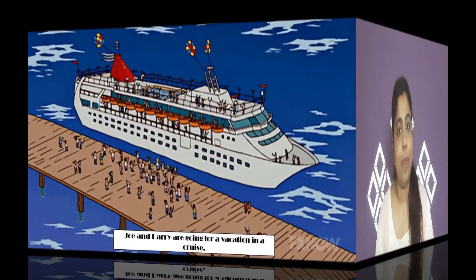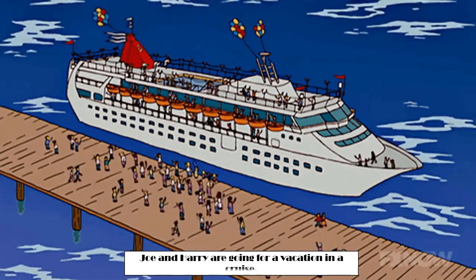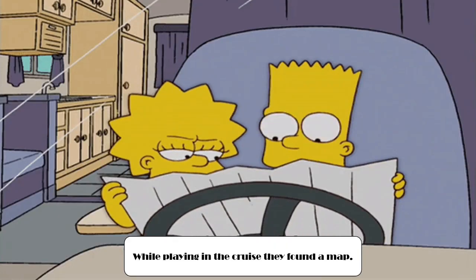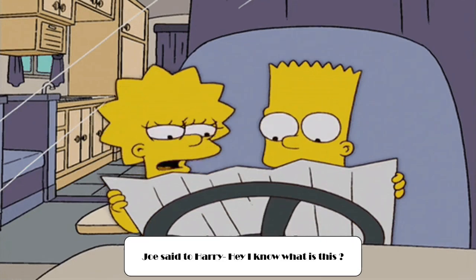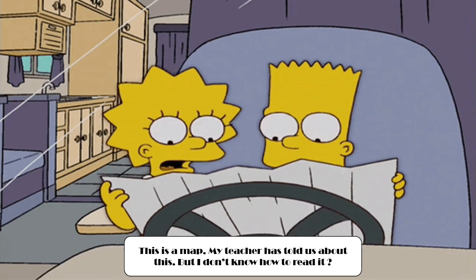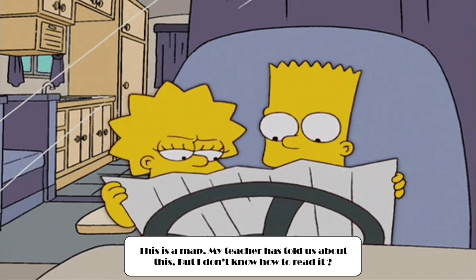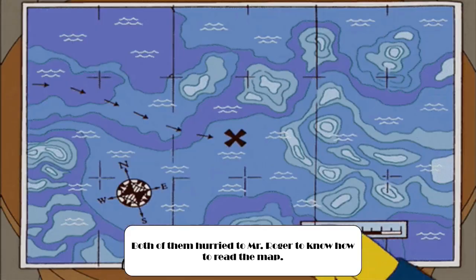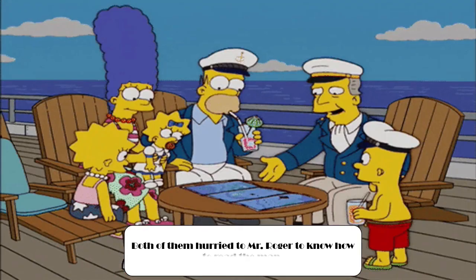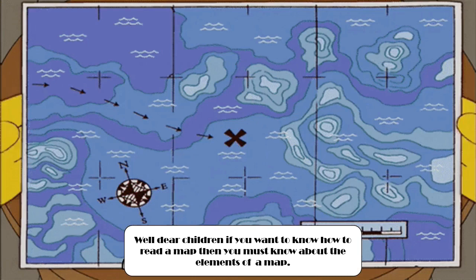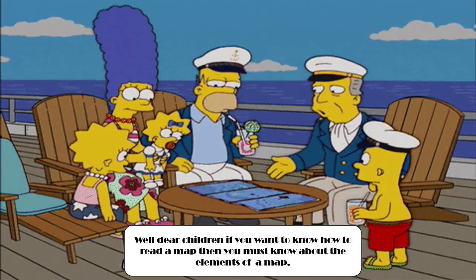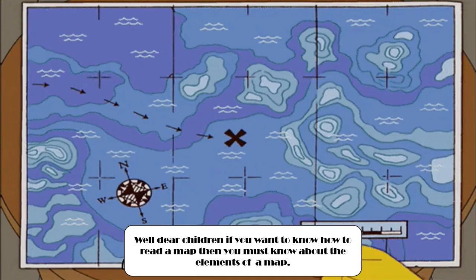Joe and Harry are going on a vacation on a cruise. Their uncle, Mr. Roger, is the captain of the cruise. While playing on the cruise they found a map. Joe said to Harry, 'I know what this is — it's a map, my teacher told us about it, but I don't know how to read it.' Both of them hurried to Mr. Roger to learn how to read the map. Mr. Roger said, 'If you want to read a map, you must know about the elements of a map.'